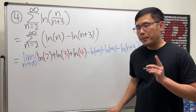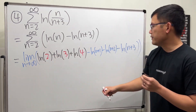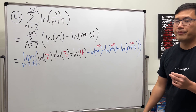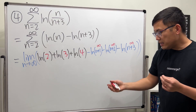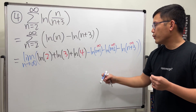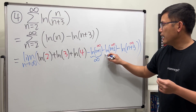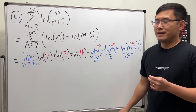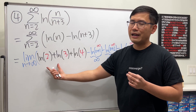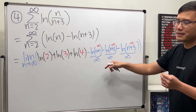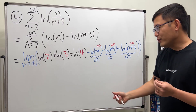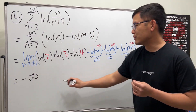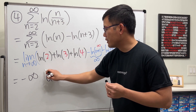As n goes to infinity, ln of n plus three, ln of n plus two, and ln of n plus one all go to infinity. We are subtracting three infinities from a finite amount, so we end up with negative infinity. This series diverges.